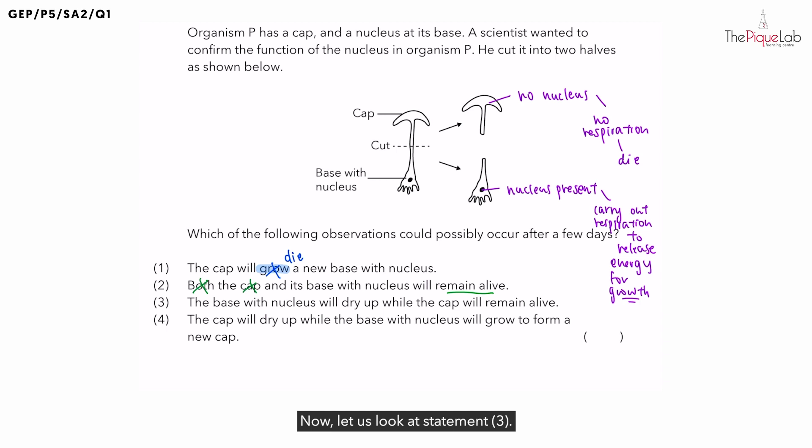Now, let us look at statement three. It says that the base with nucleus will dry up while the cap remains alive. Is this statement correct? Does the base dry up? So, the base is over here. We said that it continues to grow. So, this is incorrect. And how about the cap? Does the cap remain alive? No, as well. We said that the cap will eventually die.